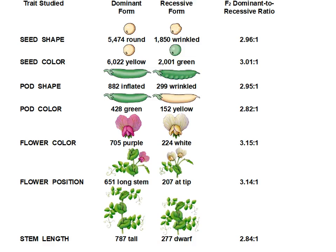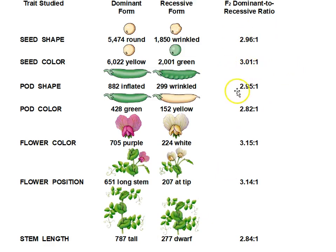This is looking at all of the characteristics that Gregor Mendel worked with. He looked at seed shape — round versus wrinkled; seed color — yellow versus green; pod shape — inflated versus wrinkled; pod color — green versus yellow; flower color — purple and white; flower position — within the stem or at the tip; and stem length — tall versus dwarf. For all of these traits, when he started with true breeding parents, took them through the F1 generation and on to the F2 generation, he always found a 3:1 ratio of dominant to recessive trait.